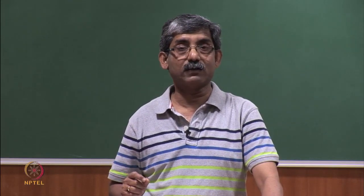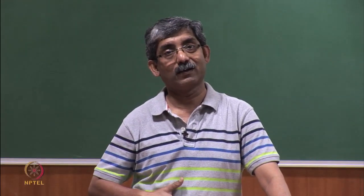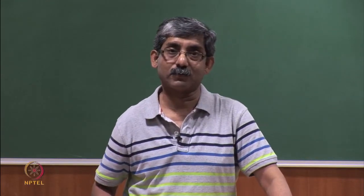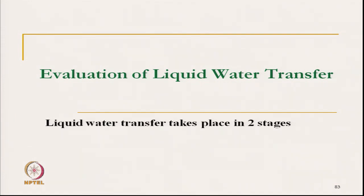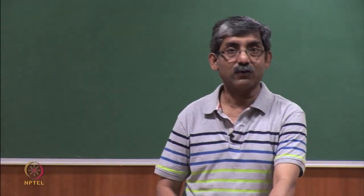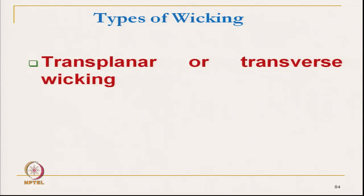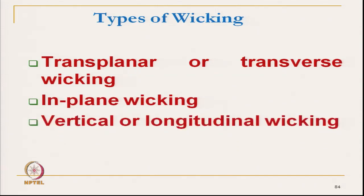Transplanar wicking is particularly important for fabric clothing because water needs to get transmitted from the inner layer to the outer layer — from one surface of the fabric to another. Evaluation of liquid transfer transmission is in two stages: the first stage is wetting, which we have already discussed, and the second stage is wicking. The three types are transplanar, in-plane, and vertical or longitudinal wicking. In-plane wicking is also termed horizontal wicking.